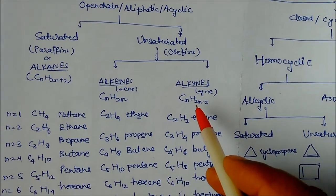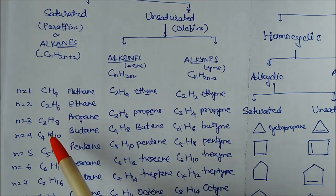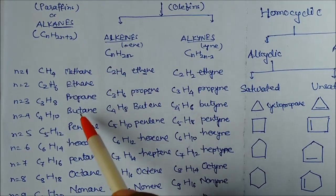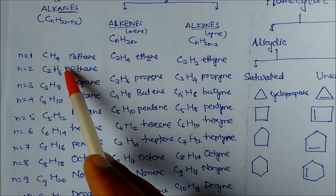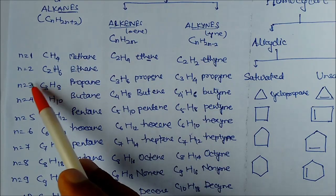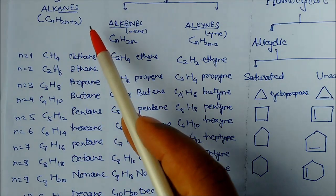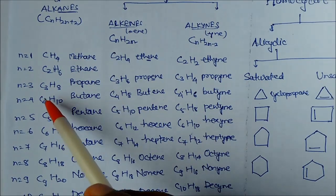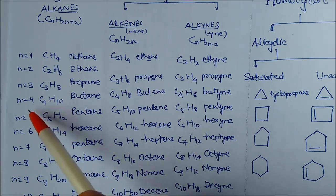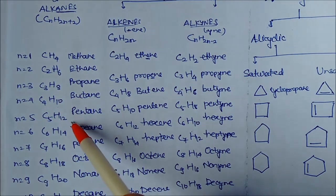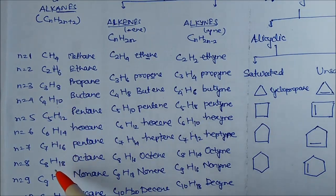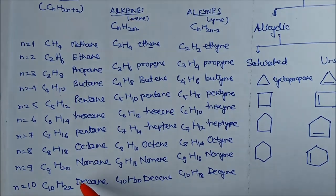If we take n=1 for the alkane formula, we get methane. For n=2, the formula gives C2H6; for n=3, C3H8; and for n=4, C4H10, and so on for n=5, 6, 7, 8. There are many names given here.